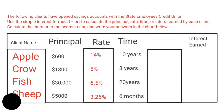Here are some problems. The following clients have opened saving accounts with the State Employees Credit Union. Use the simple interest formula I = PRT to calculate the principal, rate, time, or interest earned by each client. Calculate the interest to the nearest cent and write your answers in the chart. The clients are Apple, Crow, Fish, and Shape, with principals of $600, $1,300, and $30,000; rates of 14%, 5%; and times of 10 years, 3 years, and 20 years.